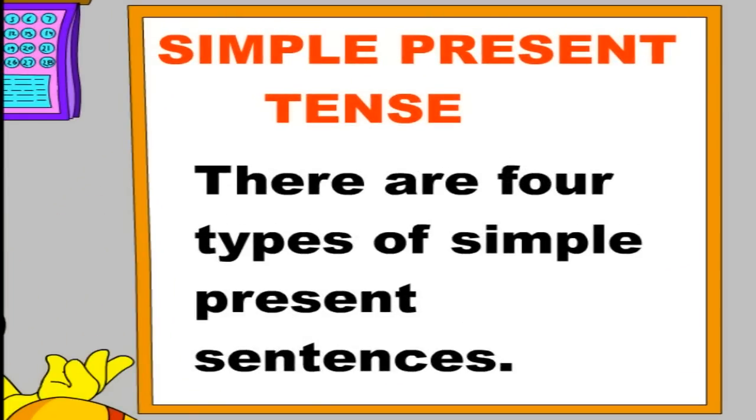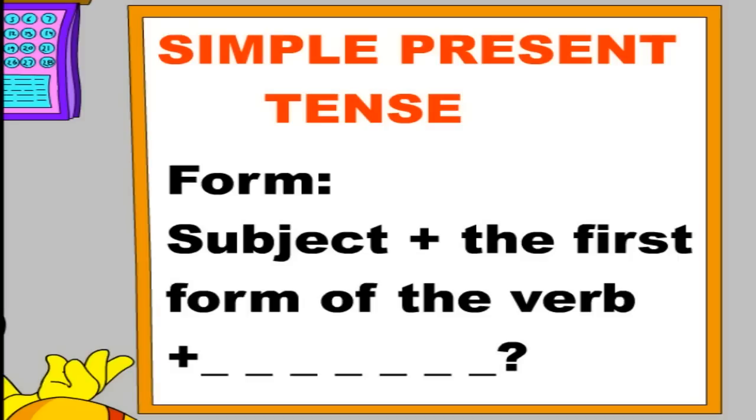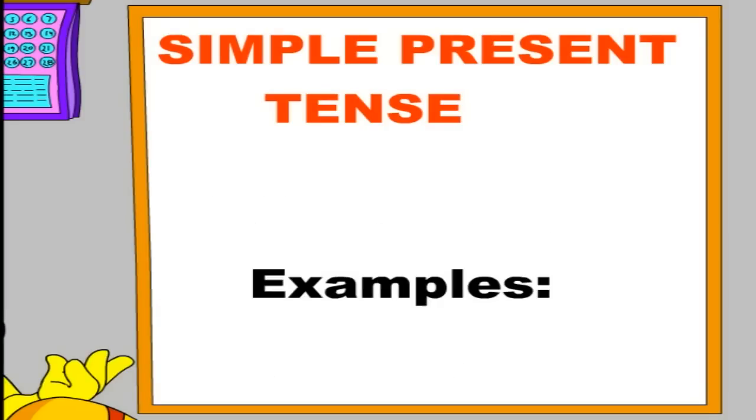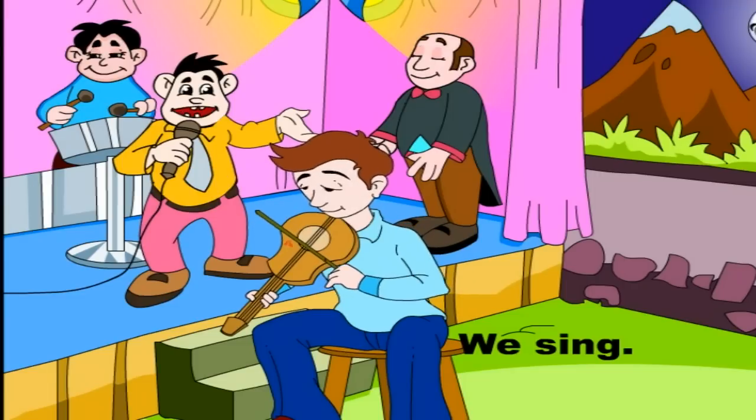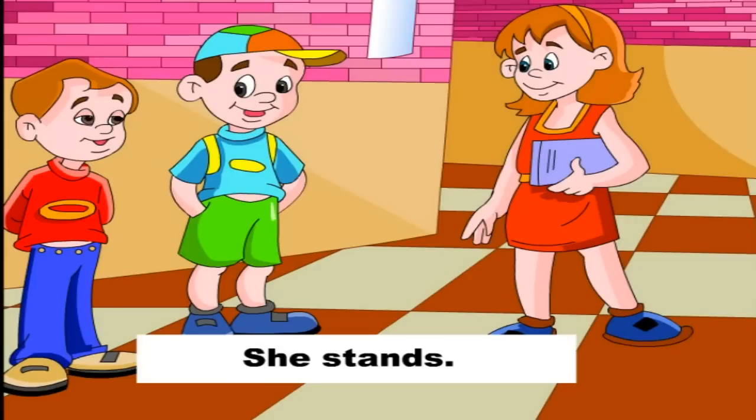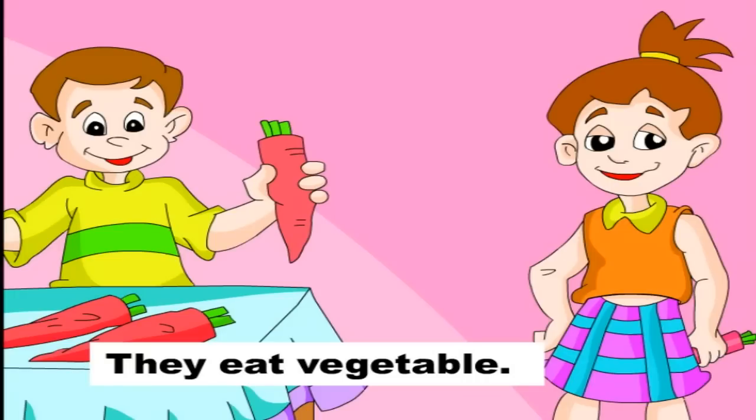There are four types of Simple Present Sentences. First, Statement Sentences. A subject followed by the first form of the verb forms it. Form: Subject plus the first form of the verb plus the activity. Examples: I read. We sing. She stands. They eat vegetables.